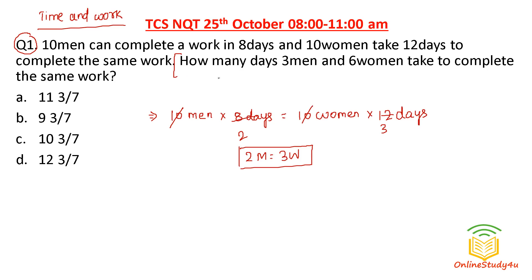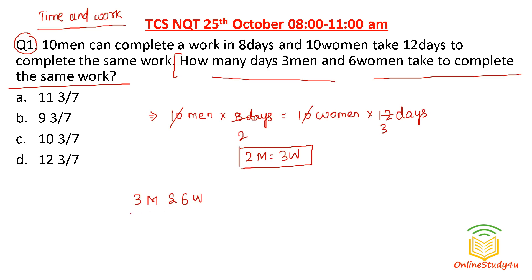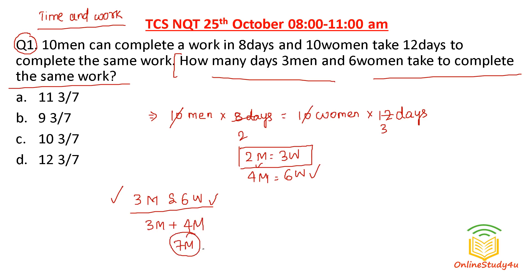The question asks: in how many days will three men and six women complete the same work? Since three women equals two men in efficiency, six women equals four men. So three men plus six women is equivalent to seven men. We use the formula M1×D1/W1 = M2×D2/W2.